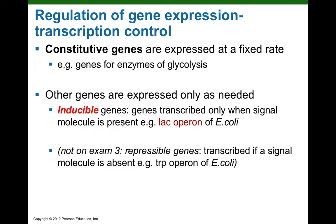It turns out there are three types of genes in the bacterial chromosome. Constitutive genes are structural genes that encode information for proteins that are constantly needed by the cell, so constitutive genes are constantly being expressed — that is, constantly being transcribed and translated. A perfect example would be the genes that encode information for the enzymes used in glycolysis. The cell always has to have enzymes for glycolysis, so those genes are constantly transcribed and translated, constantly expressed — thus they're called constitutive genes.